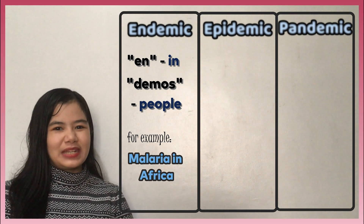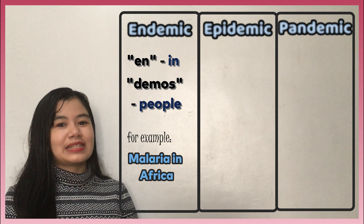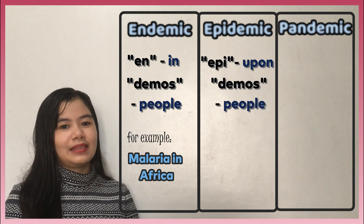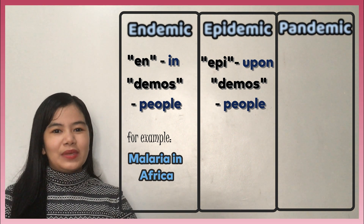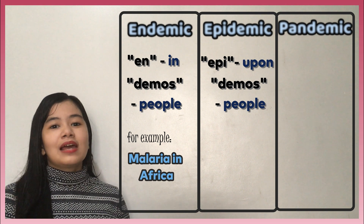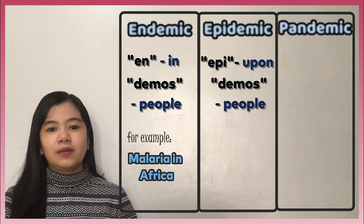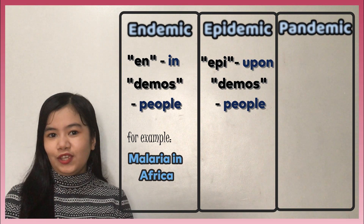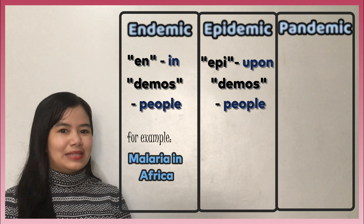Next, we have epidemic. Ang epidemic ay mula sa Greek words na 'epi,' meaning 'upon or above,' at 'demos,' meaning 'people' o 'tao.' Ang epidemia ay salitang ginagamit upang ilarawan ang mabilisang pagkalat o pagkahawa ng mga tao sa isang lugar. Ito ay maaari mangyari sa isang region, sa isang komunidad, o sa isang bansa.